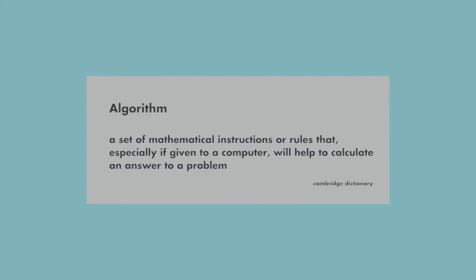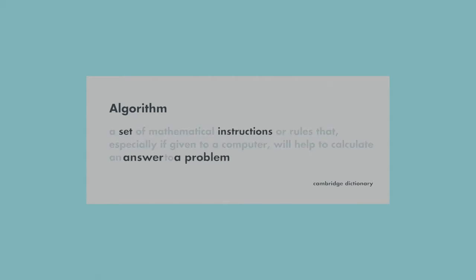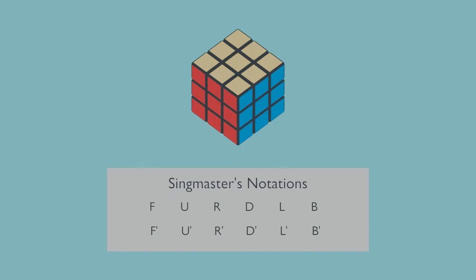Before going any further, let's define what an algorithm actually is first. Simply put, it's just a specific set of instructions to sort something out. In the case of the cube, it's simply just a specific set of turns, usually described using something called Singmaster Notation.